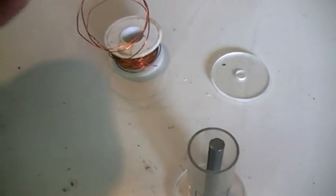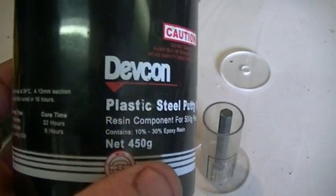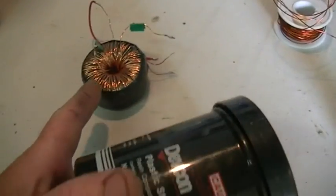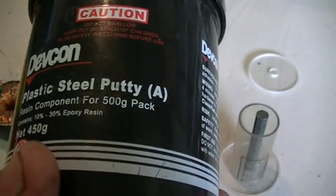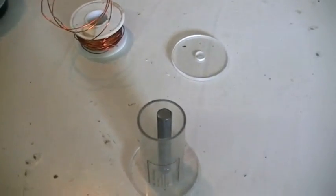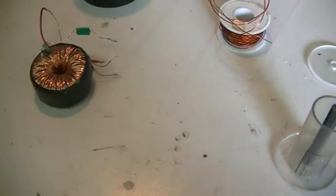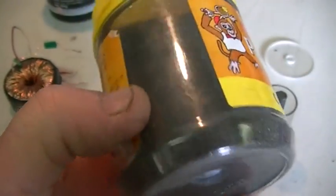And the one I've used in previous experiments, the first type of this coil was this DEVCON plastic steel putty. And in this one here I've actually used cast iron filings that I collect from our brake lathe machine at work.